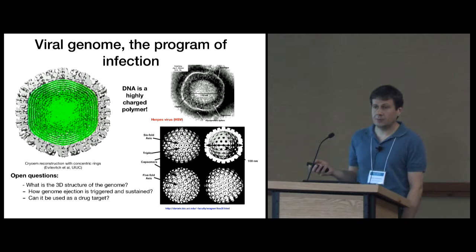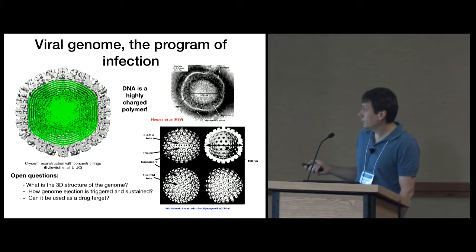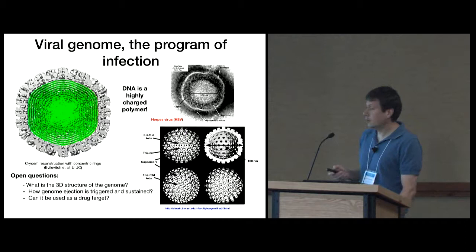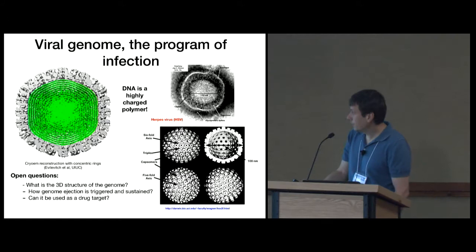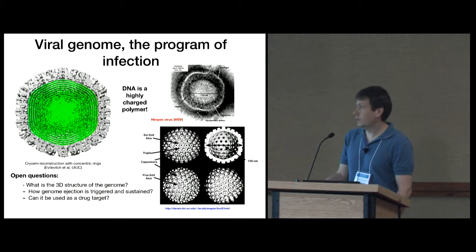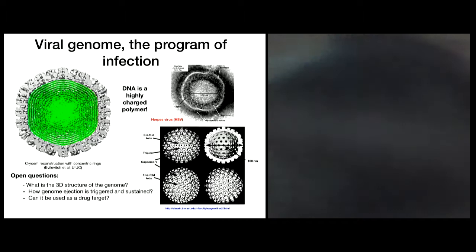One particular thing about viruses is that it contains its program, the DNA, inside the capsid. You can think about viral genome as a kind of program for infection. Great strides have been made in elucidating experimental structure of DNA inside viruses. Here's a cryo-EM microscopy picture from Alex Evilevich from University of Illinois, which reveals this very ordered structure of DNA inside. But that is somewhat surprising because most of you probably know that DNA is a very charged polymer, one of the most charged polymers known to us. And yet somehow it manages to fit inside of the capsid.